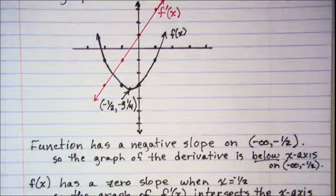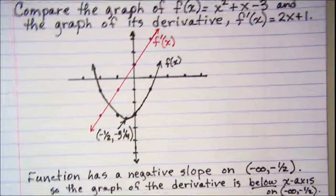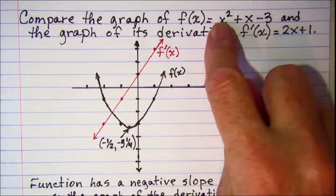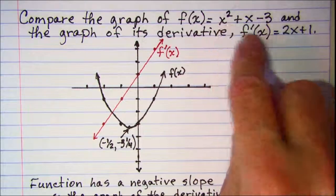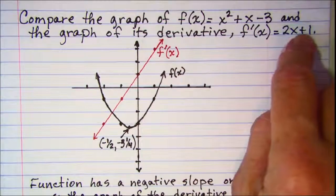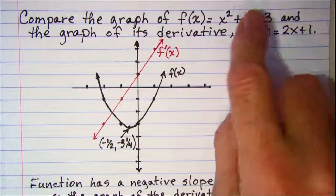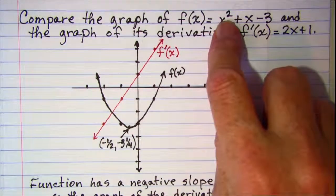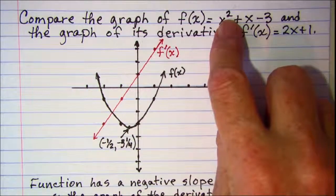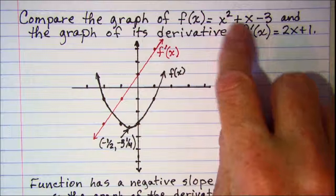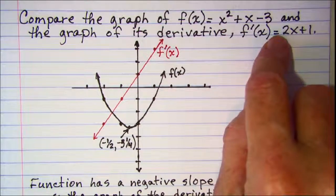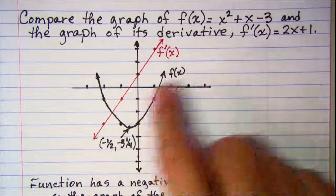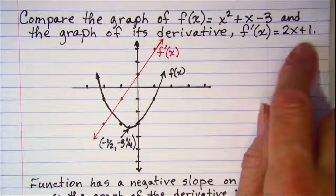Also notice that when my function is second degree, my derivative is first degree. So my function was a parabola — a quadratic equation — and my derivative, f prime of x, is a linear equation.